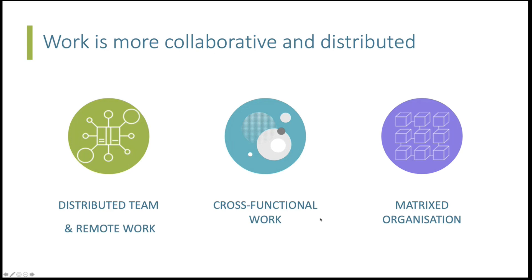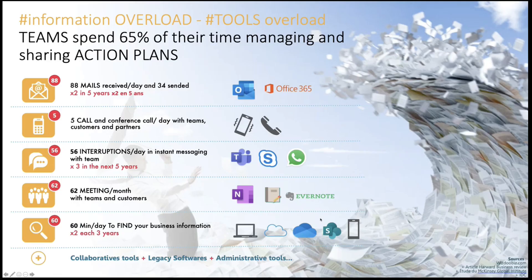All of this combined means that information is spread and it takes more time to understand what's going on and track things. The second issue is that information is spread across so many different tools and so many different types of activities — emails, calls, instant messaging, meetings — all stored and spread in so many different tools. It's very difficult to get a clear view of what's going on, because some pieces are in email, some are in Teams, some are in OneNote, and at some point you don't have a global view.